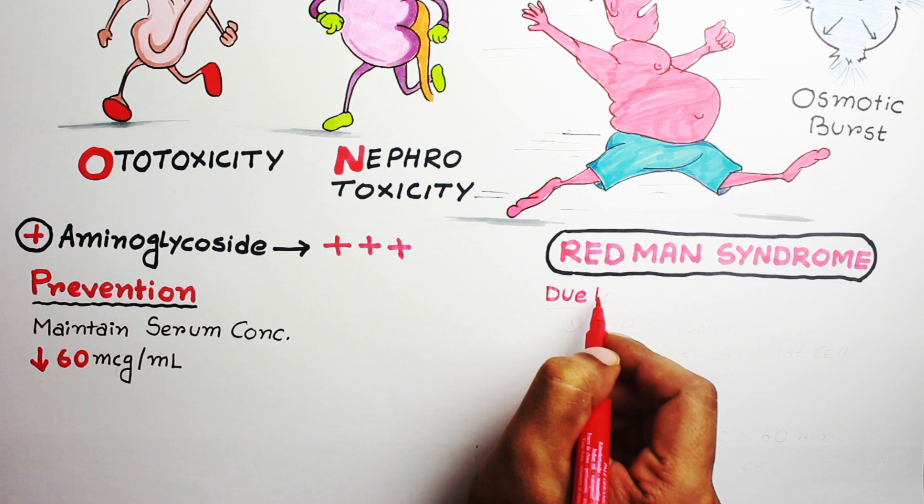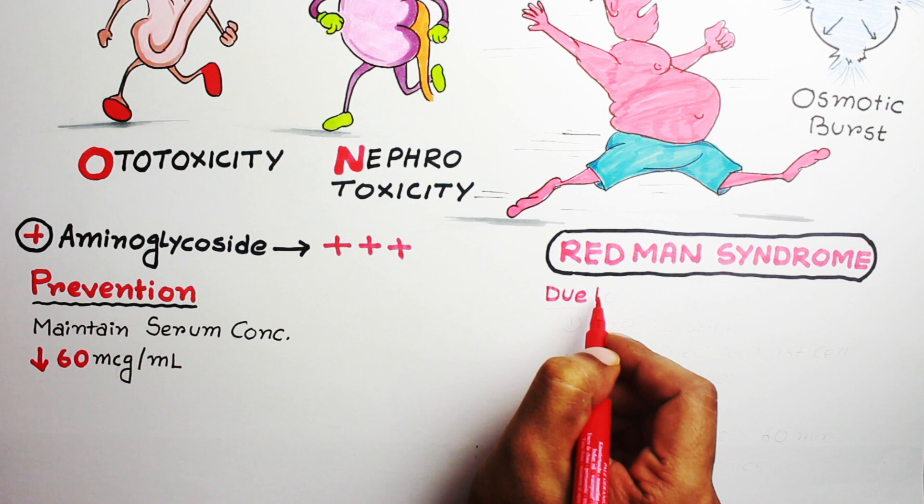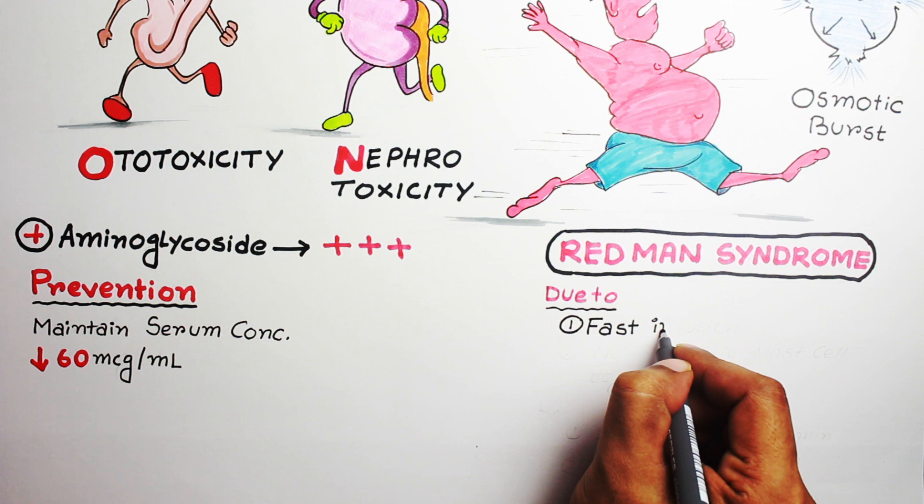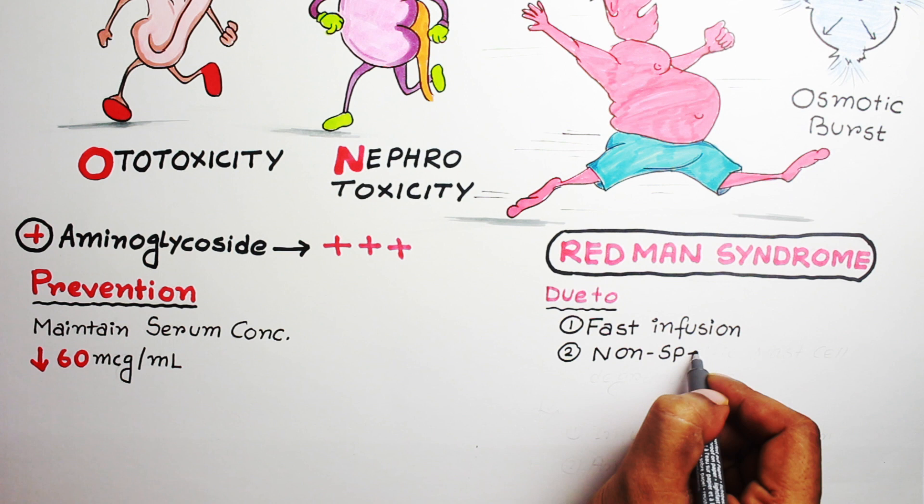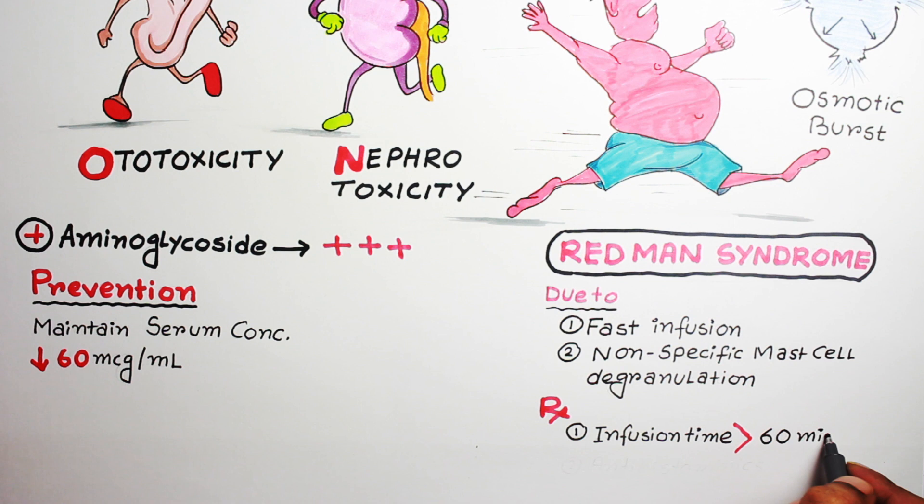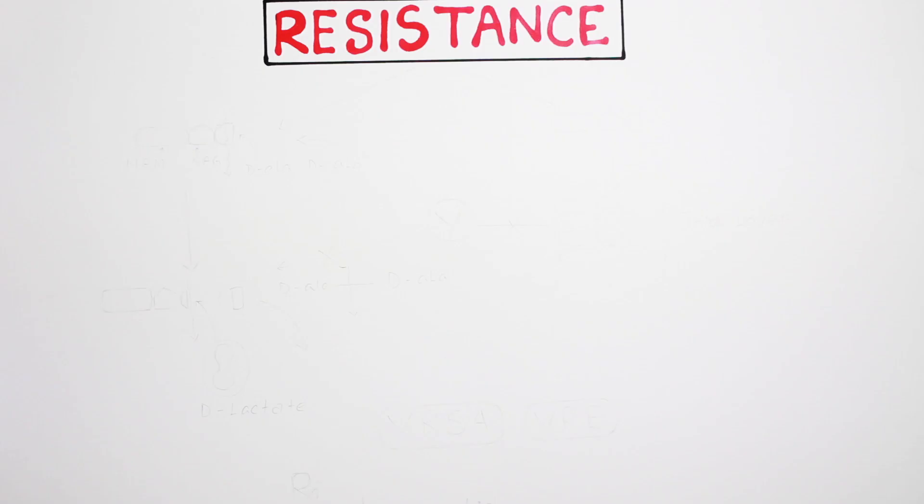Some points you should remember about red man syndrome: First, it occurs due to fast infusion of vancomycin. Second, it is non-specific degranulation of mast cells. This situation can be prevented by prolonging the infusion period to one to two hours or pre-treatment with antihistamines like diphenhydramine.